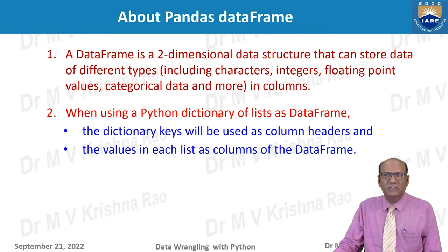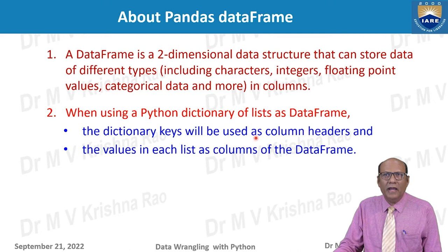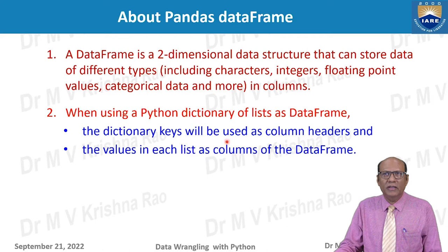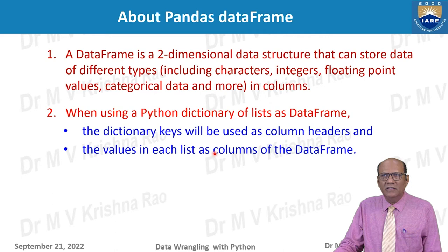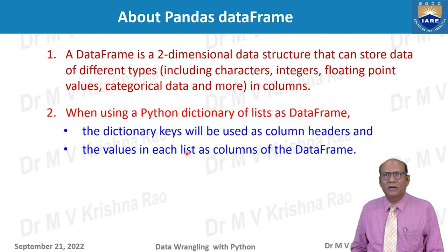When using a Python dictionary of lists, each list is assigned to a key. The dictionary keys will be used as the column headers, and the values in each list become the columns of the data frame. So the dictionary keys are used as column labels, and values under each key — which are lists — are used as the columns of the data frame. We will see some examples to understand this.